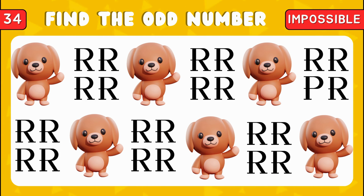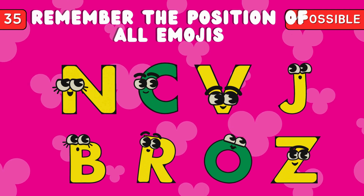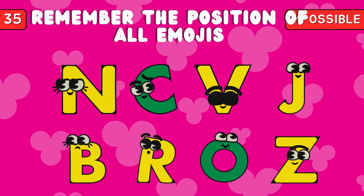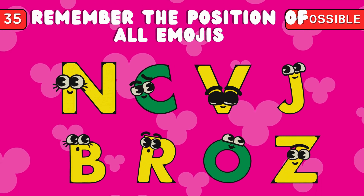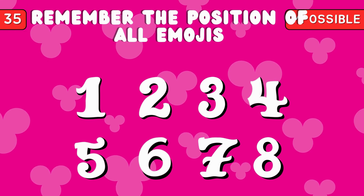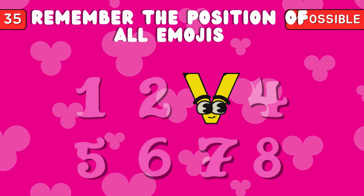Find the different letter among these. Memory test. Remember the position of all eight emojis. Ready? Where's the letter V located? Yes, it's located at position three.